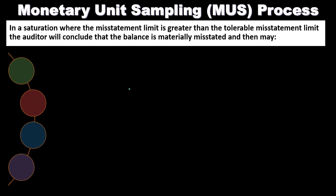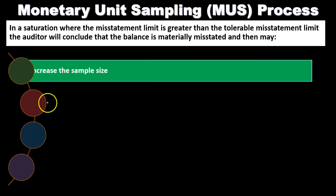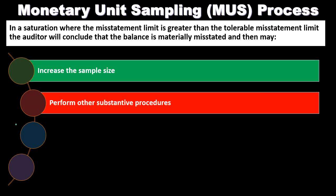However, if the upper misstatement limit is greater than the tolerable misstatement, the auditor concludes the balance is materially misstated. In that situation, the auditor can increase the sample size to double-check whether the sample was misrepresenting the population, and do more testing to determine if it is indeed materially misstated.